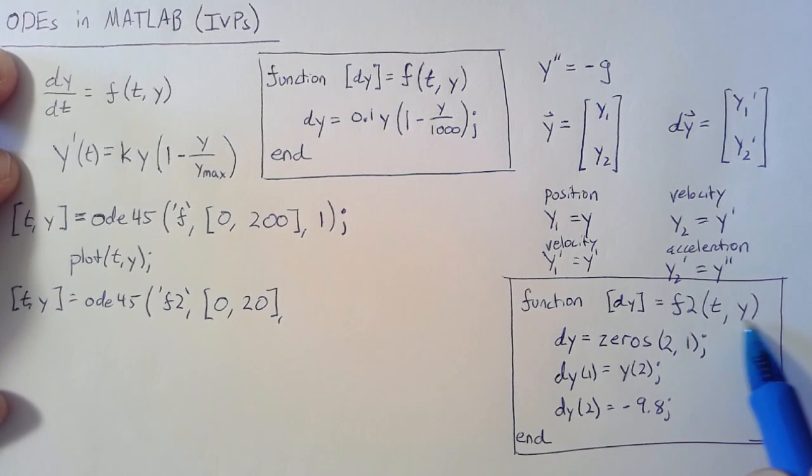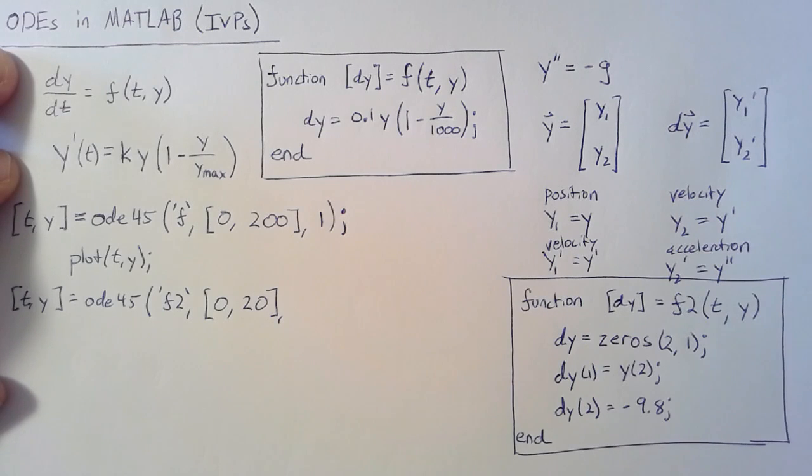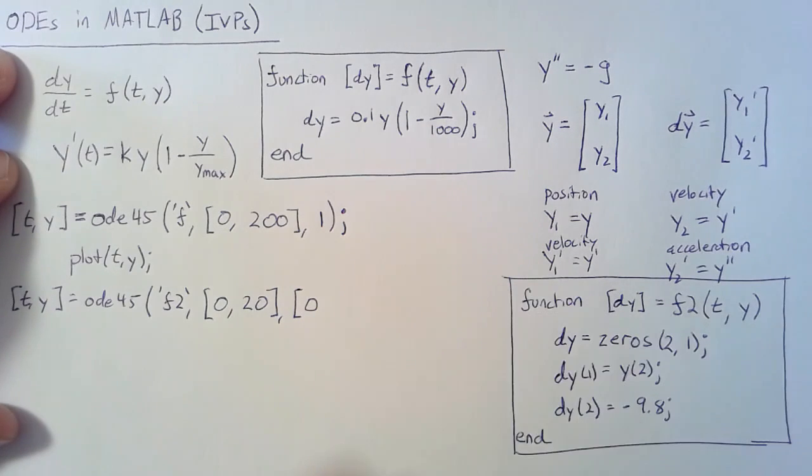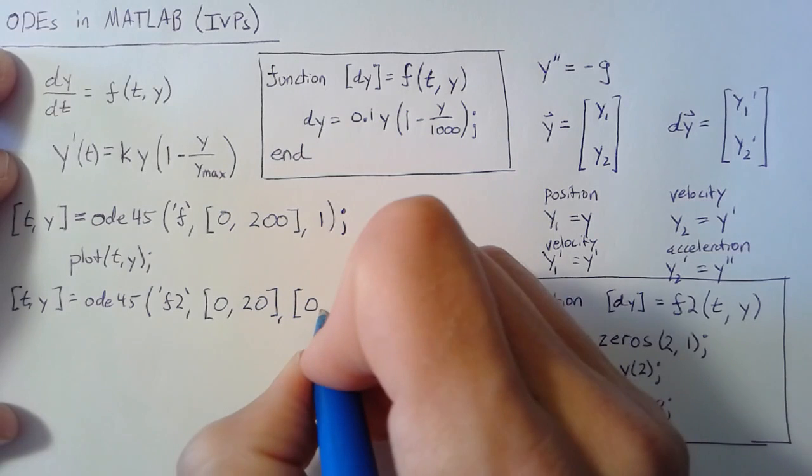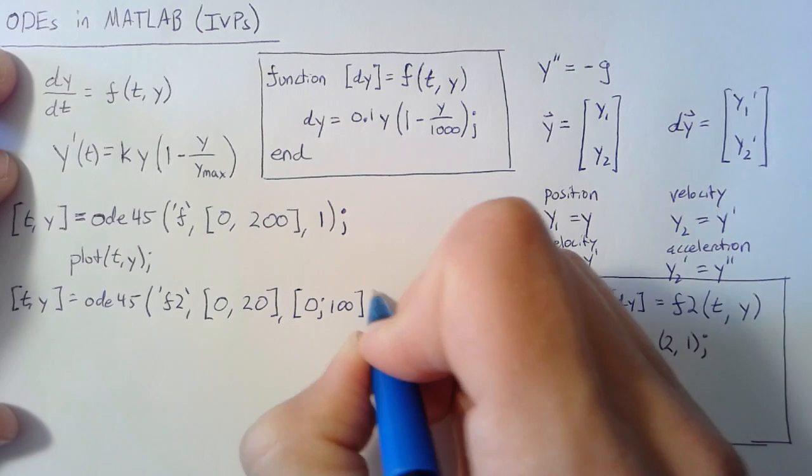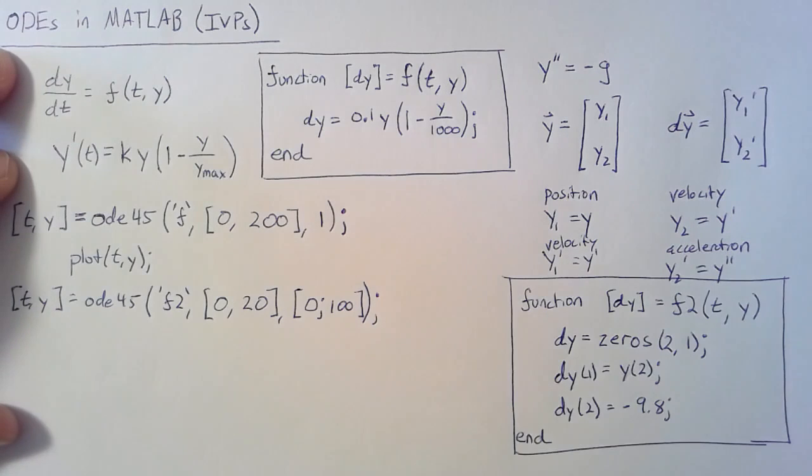The last thing is we need to give it the initial y value. Well, y has two components - the initial position and the initial velocity. So we're going to put in a column vector. We'll set our initial position to 0 and our initial velocity to 100.